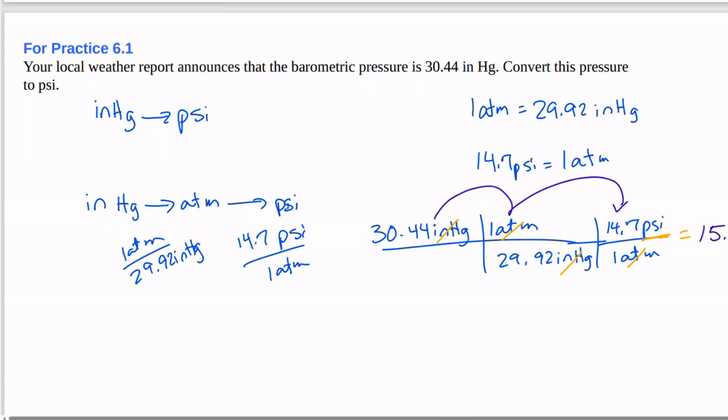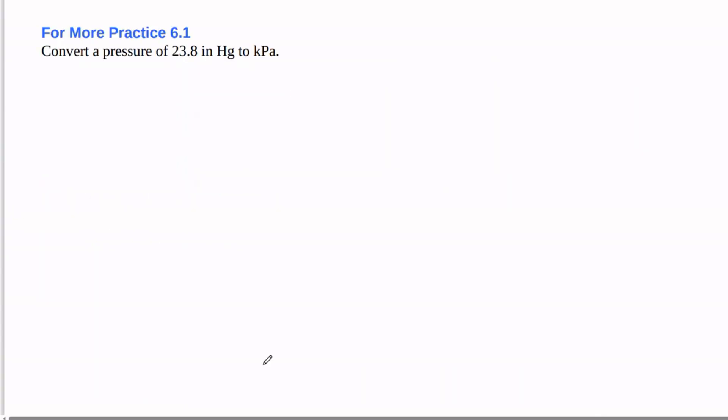So we have a four more practice problem as well. I'm going to go ahead and work that one. Convert a pressure of 23.8 inches of mercury to kilopascal.